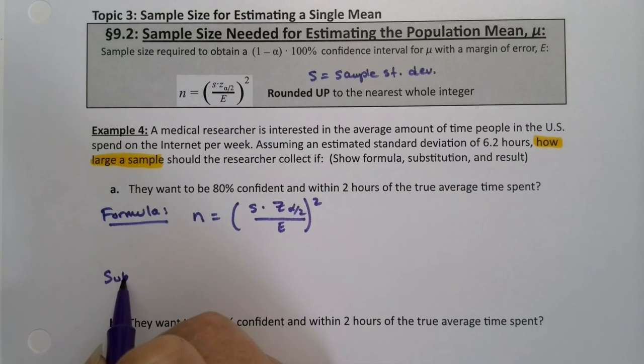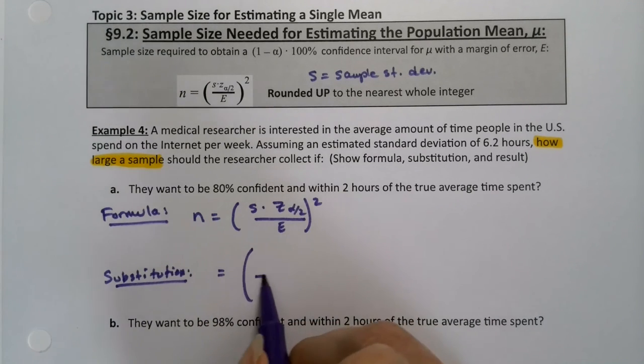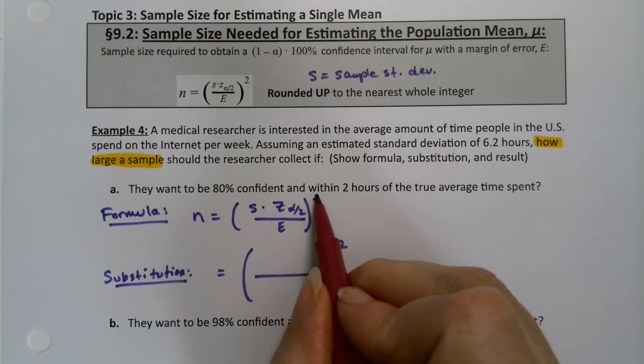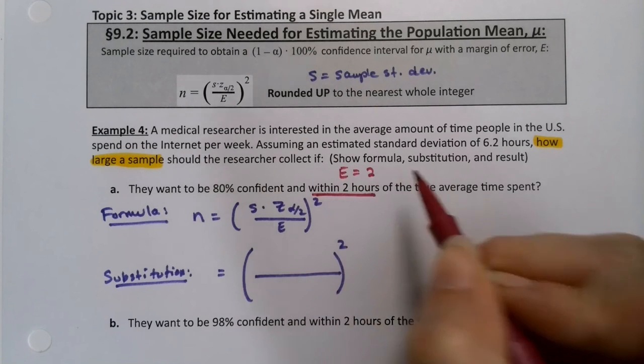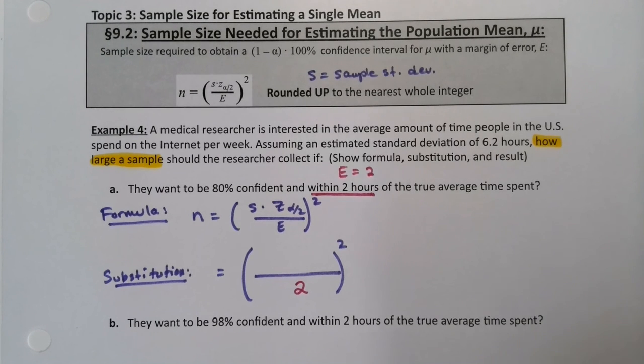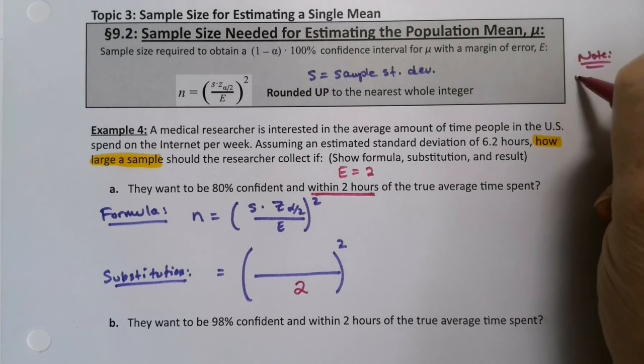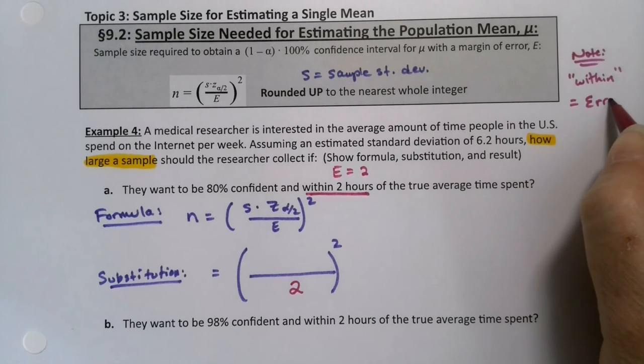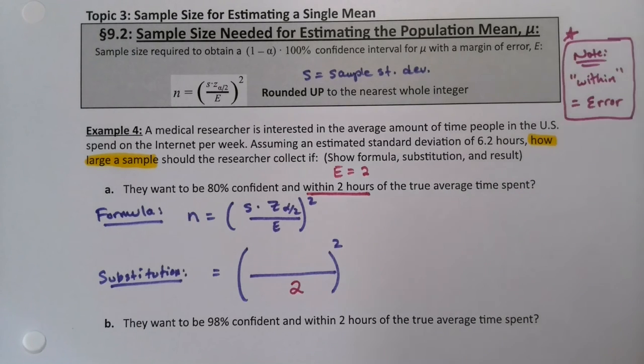They want to be 80% confident and within two hours of the average time spent. So formula would be n equals s times z alpha over two over the error squared. The substitution, which is where all the work is. And this one's not actually that bad. They want to be within two. See the word within. Within is a cue for error. So error is two. You can make a little note: the word within cues error. That margin of error.